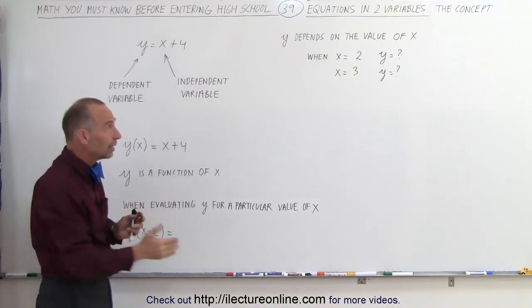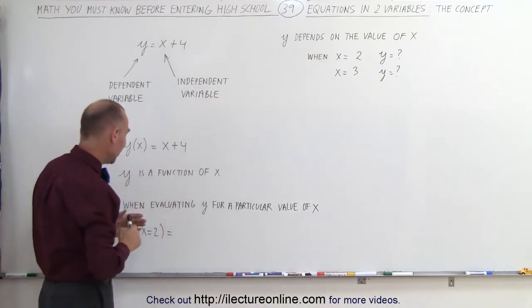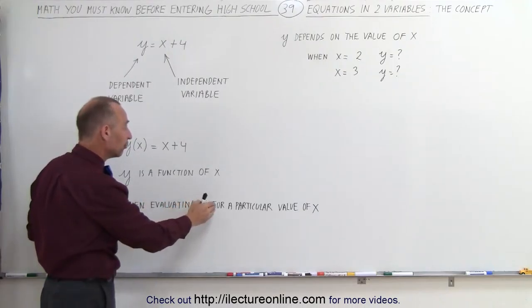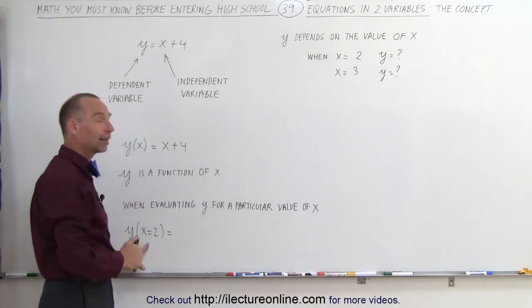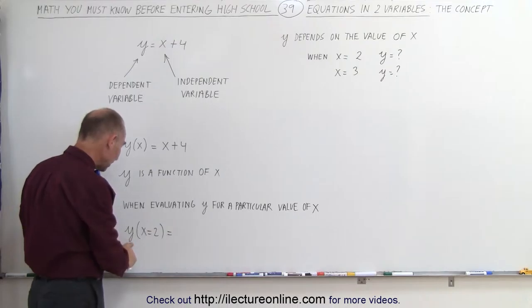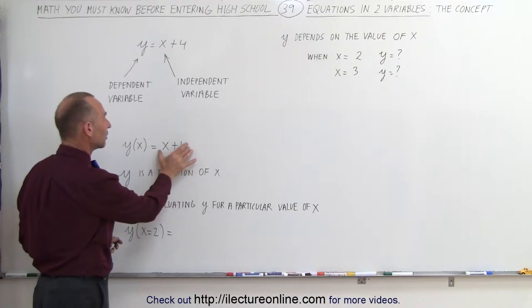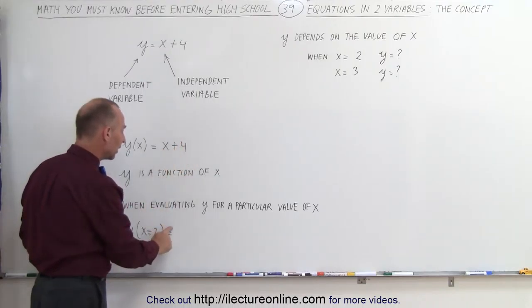If we now want to evaluate it, and that's what we were talking about over there, if we want to evaluate the function for a particular value of x, we write it like this. We want to know the value for y when x equals 2. And then all we do is take the equation right here, take the right side of the equation, plug in the value for x equal to 2, and evaluate y.